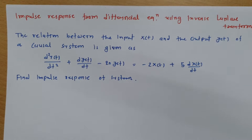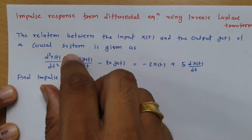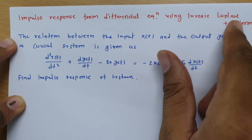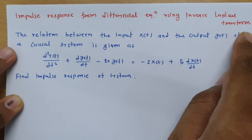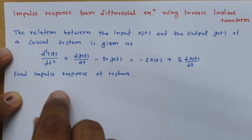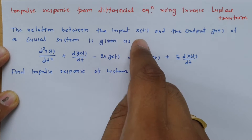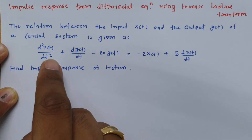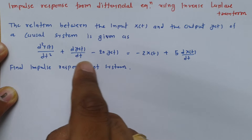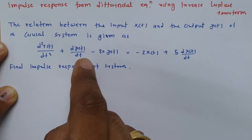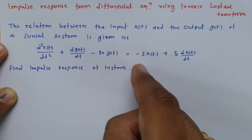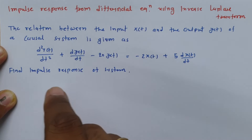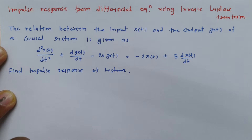Welcome to the Signal and Systems lecture series. In this session, I will explain how to find the impulse response from a differential equation using the inverse Laplace transform. We have a question where the relationship between input x(t) and output y(t) of a causal system is given as: d²y(t)/dt² + dy(t)/dt − 20·y(t) = −2x(t) + 5·dx(t)/dt. The question is: find the impulse response of the system.